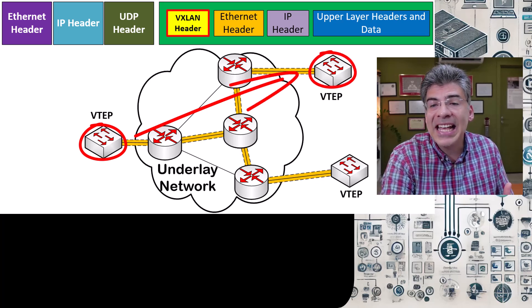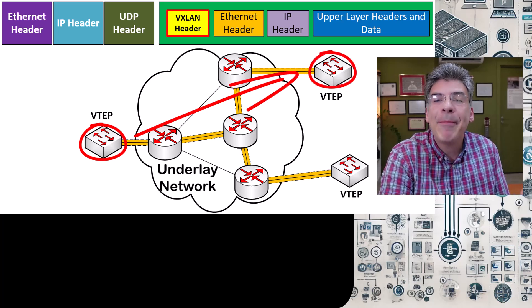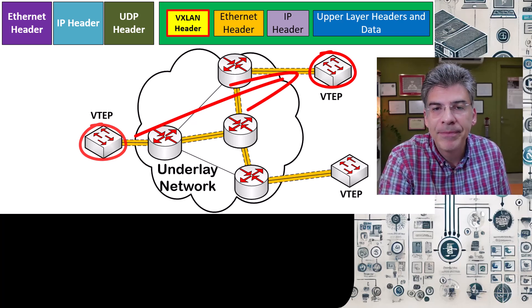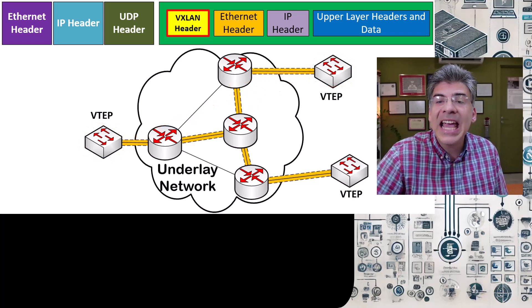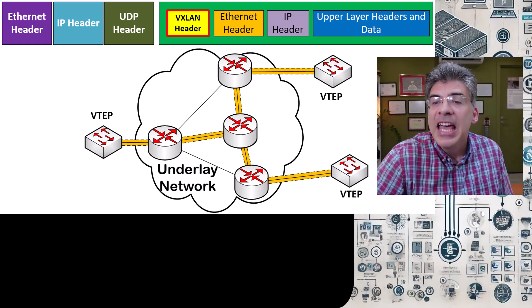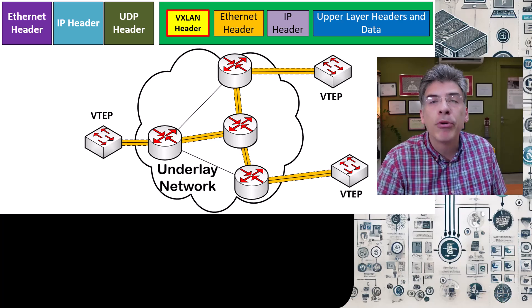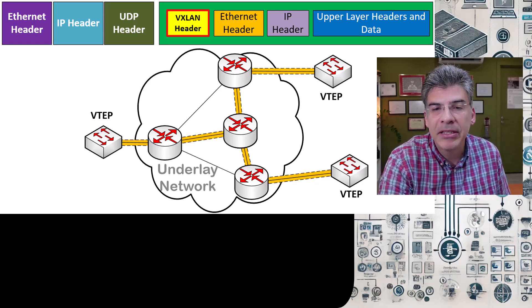The only thing the underlay network does is route traffic from one VTEP to another. Since it has a destination IP address, it can get that packet to the destination VTEP. Once there, the decapsulation process takes place, the VXLAN header is read, and the frame is then placed on the appropriate layer two segment.